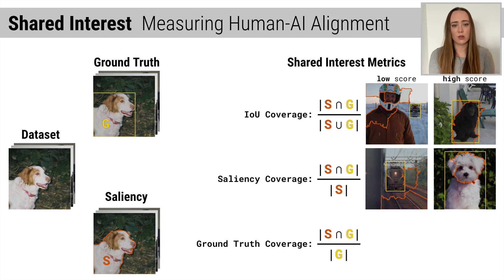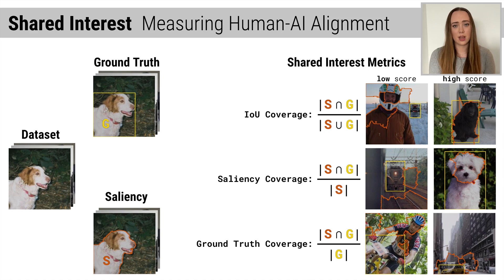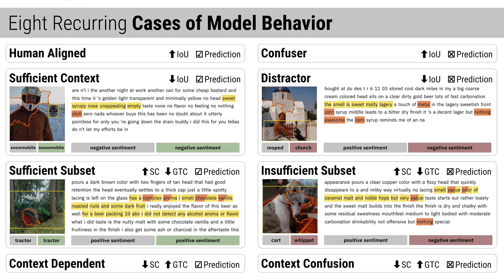Finally, ground-truth coverage measures the proportion of ground-truth features that are salient to the model's decision. Low ground-truth coverage means that few ground-truth features are salient, like in this example where the saliency focuses on the biker as opposed to the bike. High ground-truth coverage indicates all of the ground-truth features are salient, like in this image where the saliency highlights the cab and the street behind it. Using these scores, each image in the dataset is quantified, allowing us to systematically sort and explore them to understand model behavior. Applying Shared Interest to a variety of models uncovered eight common cases of model behavior that persisted across modality, task, and saliency method.